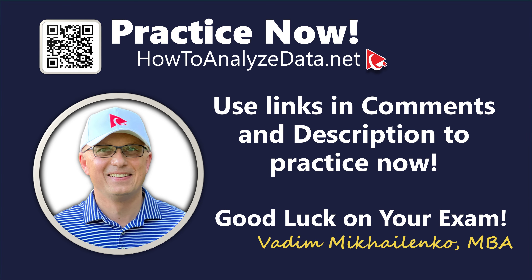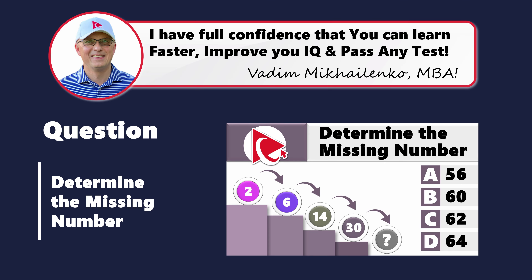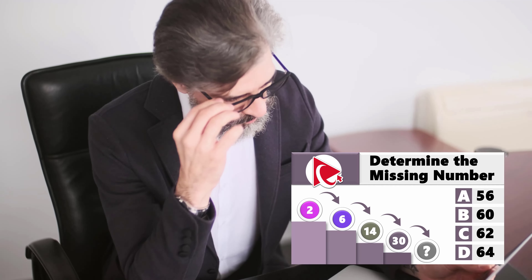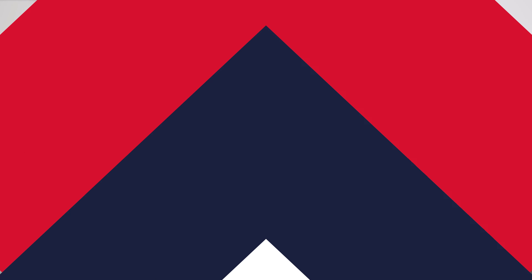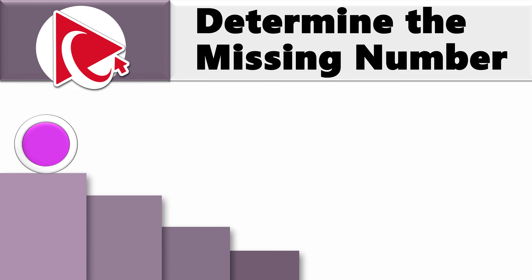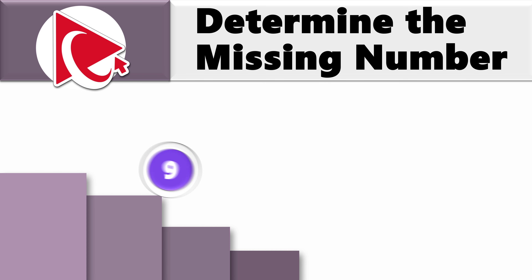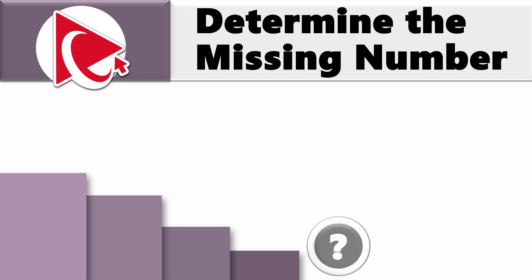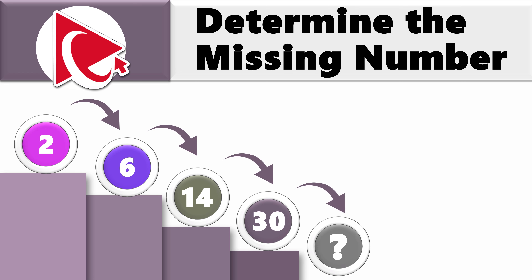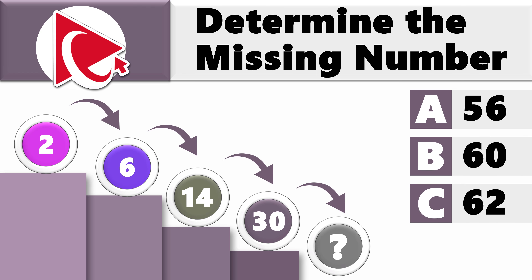Get ready to flex those brain muscles. This question makes you think harder than a coffee addict trying to function without their morning brew. You are presented with a ball which falls on the stairs, and with each fall it changes number. The numbers starting from the top are 2, 6, 14, 30, and then comes the missing number. Choices: A: 56, B: 60, C: 62, and last but not least, D: 64.